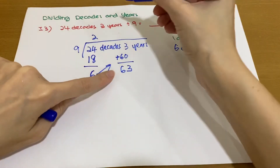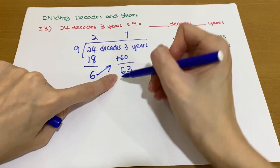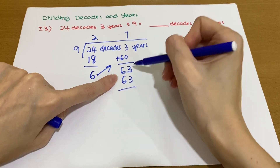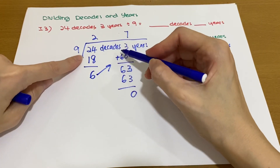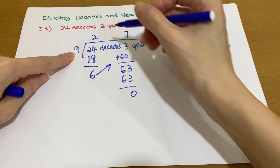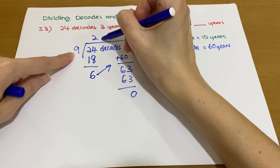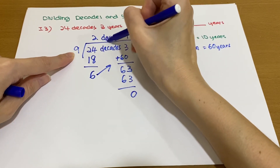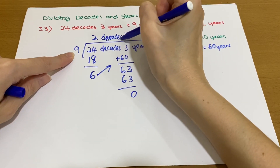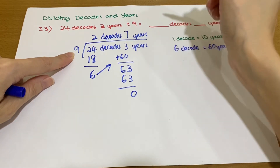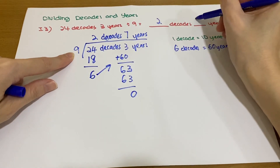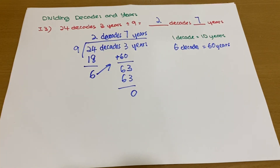7 × 9 = 63, balance 0. So 24 decades 3 years divided by 9 gives us 2 decades and 7 years. That's all for today, thank you for watching.